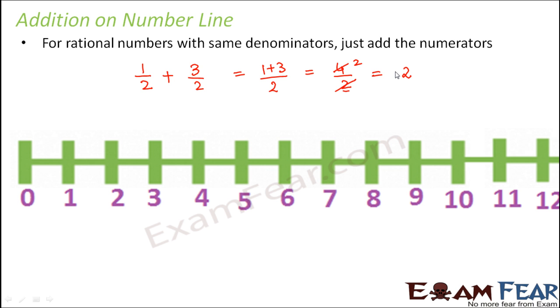Now if you want to look at this addition on the number line, let's go to 0. From 0, where is 1 by 2? 1 by 2 lies exactly midway between 0 and 1. And from this 1 by 2, we are adding 3 by 2. That means 1 by 2 plus 3 by 2.